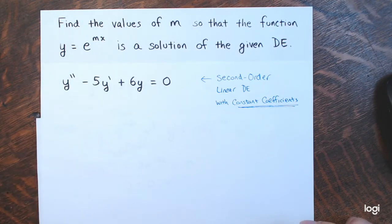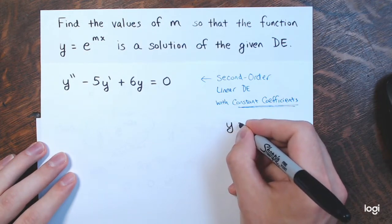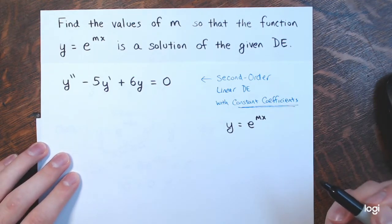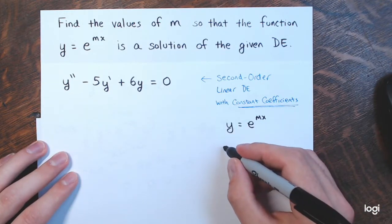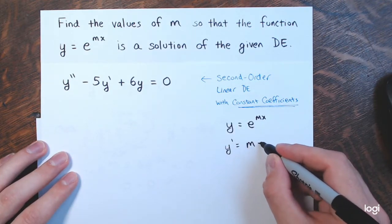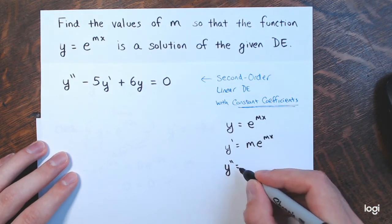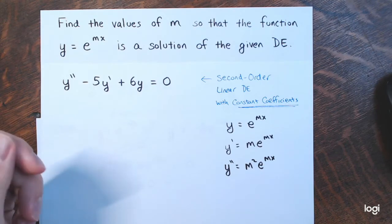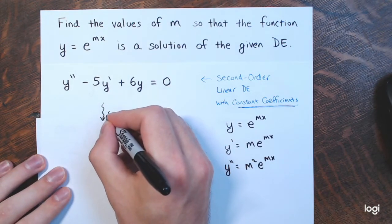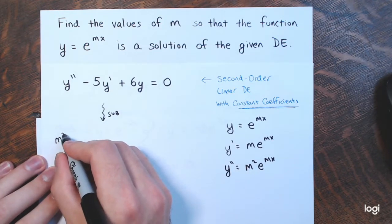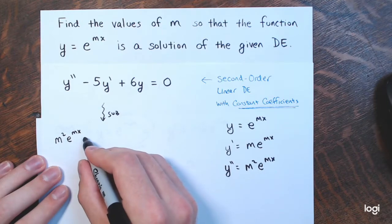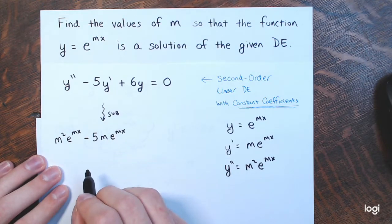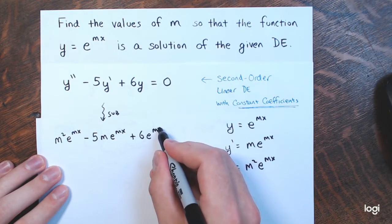You're going to substitute y equals e to the mx into this equation and find what values of m make it true. It's second order, so we need up to the second derivative: y prime is m times e to the mx, and y double prime is m squared times e to the mx — remember, m is just a constant. Making the substitutions: m squared times e to the mx, minus 5 times m times e to the mx, plus 6 times e to the mx equals 0.